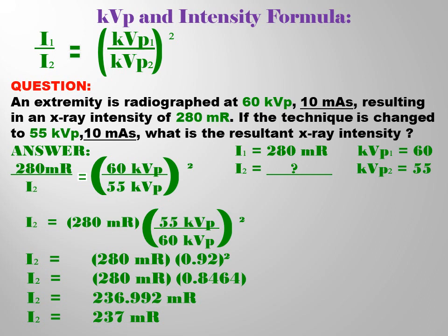Then we have 280 mR here. I just bring down the 280 mR. And then, 280 mR multiplied by 0.8464 equals 236.992 mR.